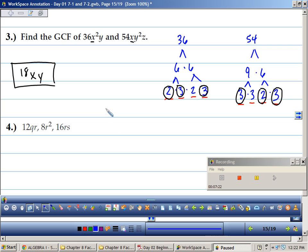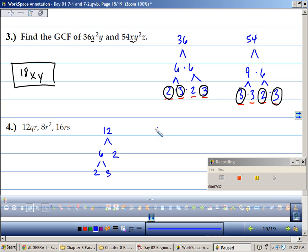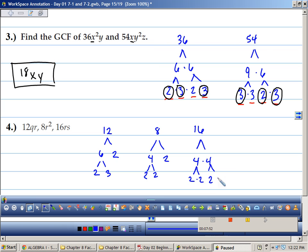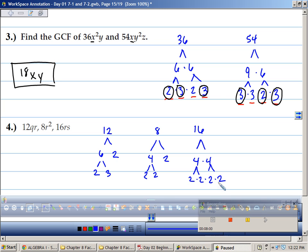Let's do this one. I have 12. What are my factors of 12? 6 and 2. 2 and 3. My factors of 8. 4 and 2. And 2 and 2. And my factors of 16. 4 and 4. 2 and 2. 2 and 2. Randy. You're whistling. It needs practice. Maybe after school. Oh, is that a yes? Okay. Randy's going to come after school and practice whistling.